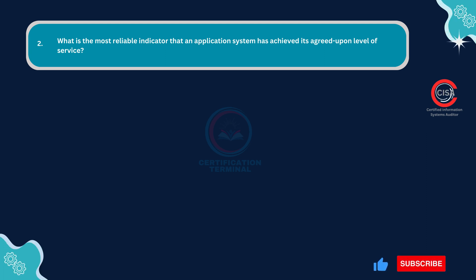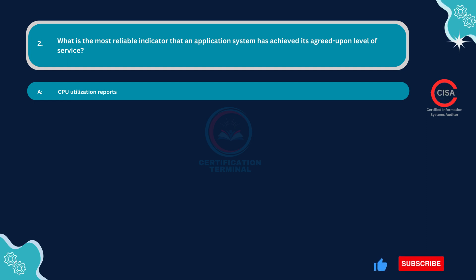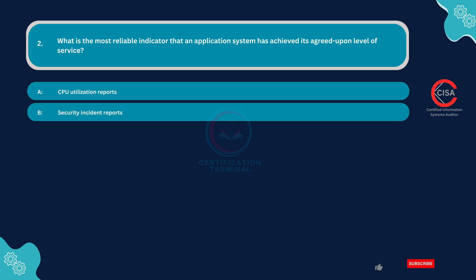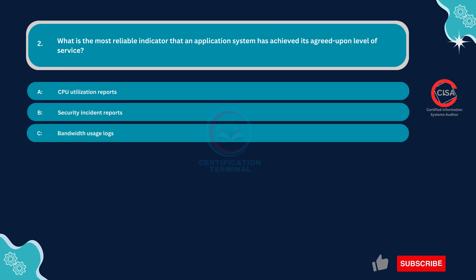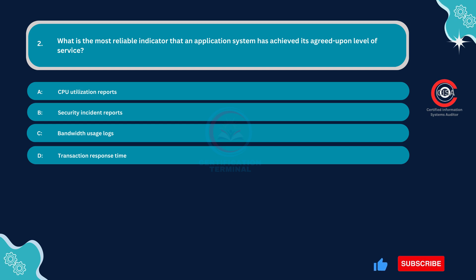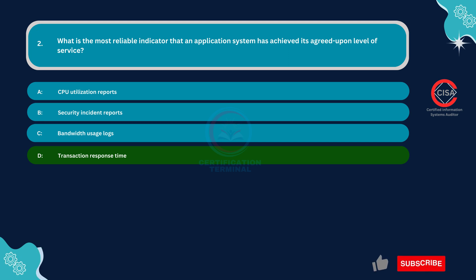Question number two: What is the most reliable indicator that an application system has achieved its agreed-upon level of service? Option A: CPU utilization reports. Option B: Security incident reports. Option C: Bandwidth usage logs. Option D: Transaction response time. The correct answer is Option D: Transaction response time.